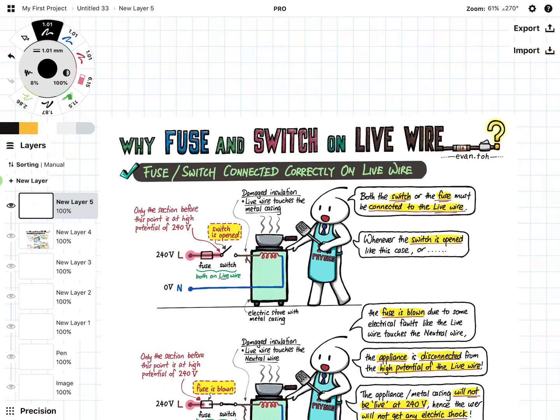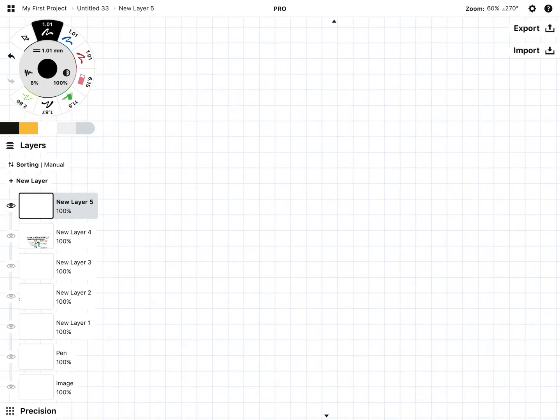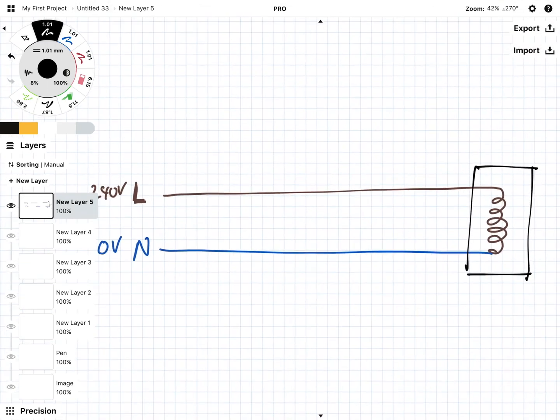In this video I'm going to give you a quick explanation of why the fuse and the switch must be on the live wire. You can read through the notes again but let's use this blank canvas here.